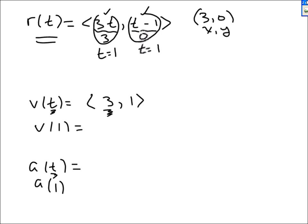For v of 1, wherever I see t I plug in 1. I get 3 for the first component, and 1 for the second component.